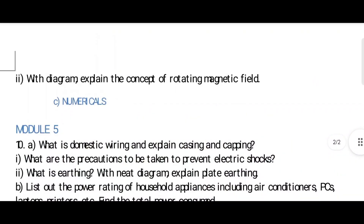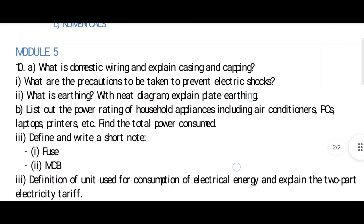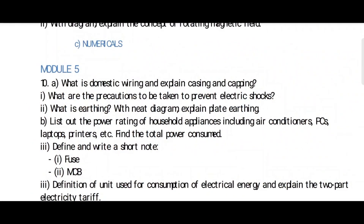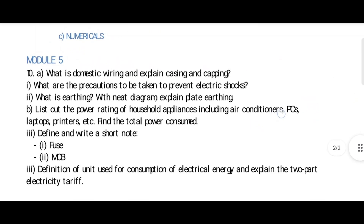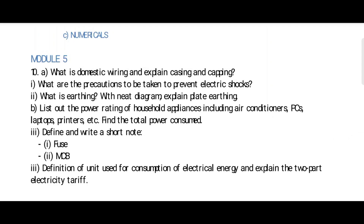Let's go to Module 5. There are more questions here — if you read this, you can attend both question 9 and question 10. In the 10th one: what is domestic wiring? Explain casing and cabling — this is the most easiest question. Diagram is more important for every question. What are the precautions to be taken to prevent electric shock? You can write in your own words. Also, earthing — everyone knows earthing. Diagram of plate earthing is more important for this question. List the power rating of household applications — laptops, PCs, printers, mobile chargers — easy question showing how much energy each consumes. Find the total power consumed — also more important. Write a short note on MCB and fuse — also the easiest question. You know MCB — there's one in your home.